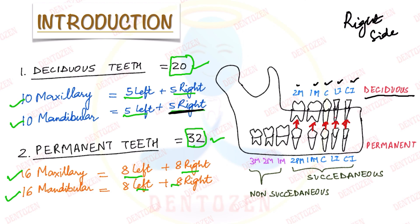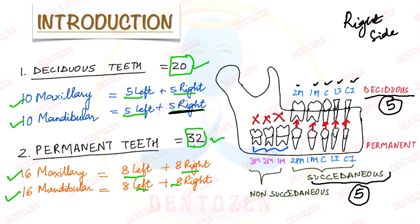These permanent teeth which replace the deciduous teeth are known as succedaneous teeth, because they succeed something — they are 5 in number. Then what about the permanent molars? These permanent molars do not replace any deciduous teeth, so they are known as non-succedaneous teeth. So permanent teeth are of two types: succedaneous teeth, which are 5, and non-succedaneous, which are 3 — that is, the permanent molars.